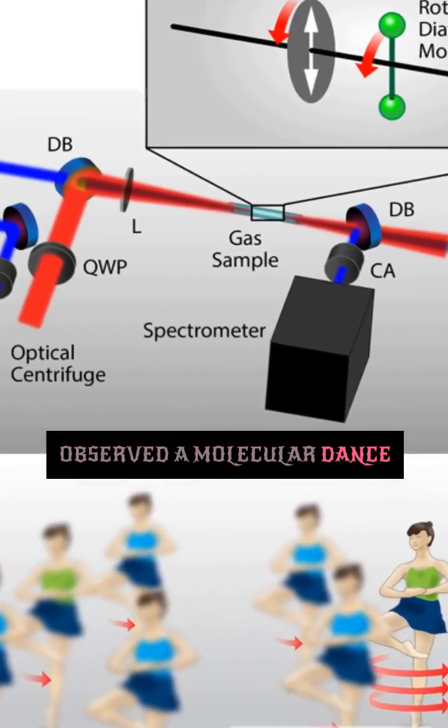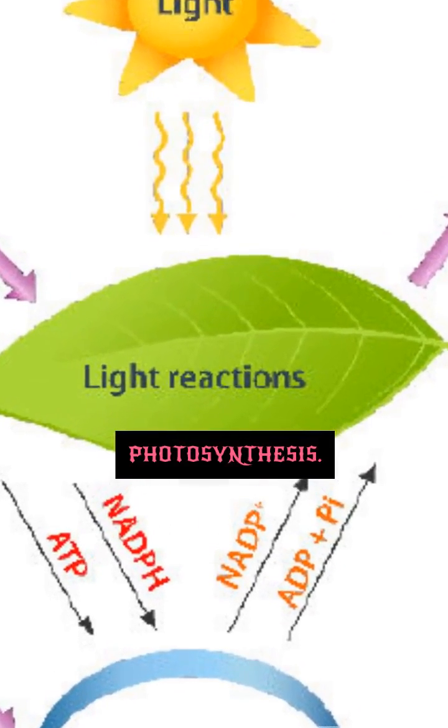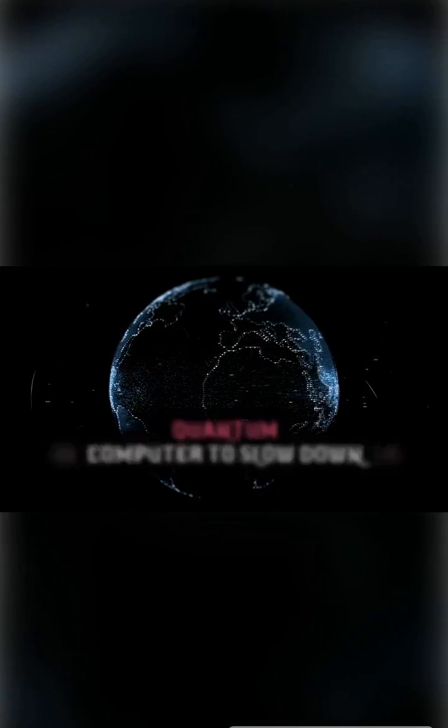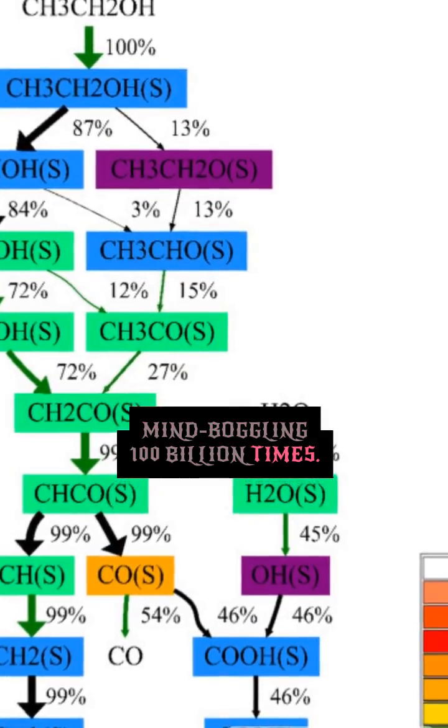For the first time, scientists have directly observed a molecular dance that's crucial to basic chemical reactions such as photosynthesis. And they've done it by using a quantum computer to slow down a chemical reaction by a mind-boggling 100 billion times.